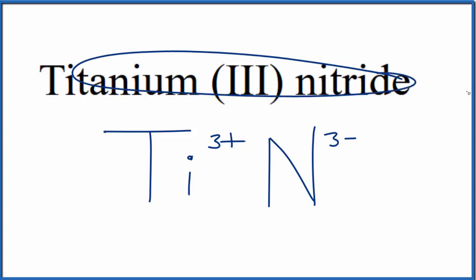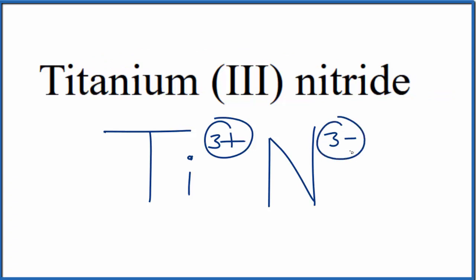Since titanium III nitride is a neutral compound, it doesn't say ion after it, these charges need to add up to zero, give us a net charge of zero. So 3+ and 3- adds up to zero.